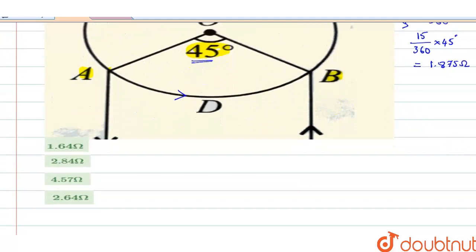You can redraw this circuit like this: you have one wire here, one curve with one resistance, and another part of the curve with another resistance. Here is A and this is B. This part we calculated as 1.875 ohms.